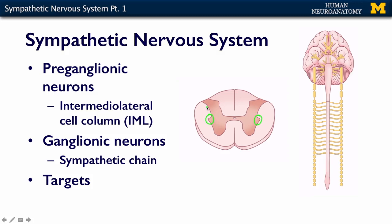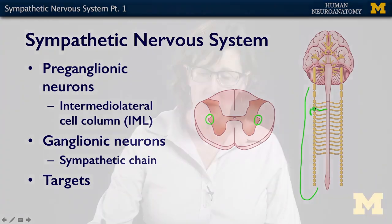The ganglionic neurons live in the sympathetic chain, which is pictured here. So neurons from the IML in the cord here project to this chain ganglion here. These nerves then in turn rejoin our spinal nerves.